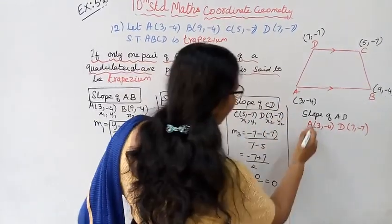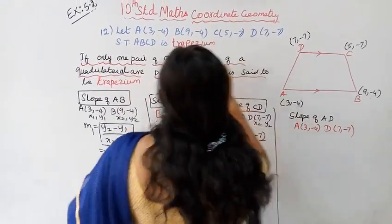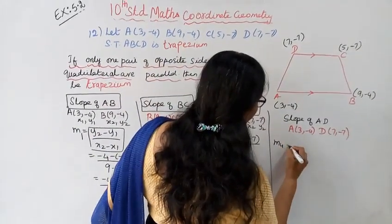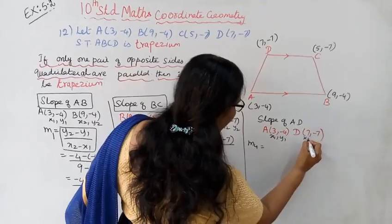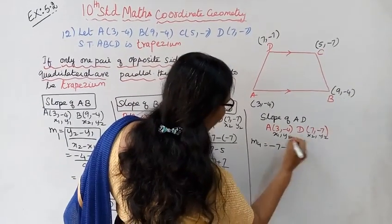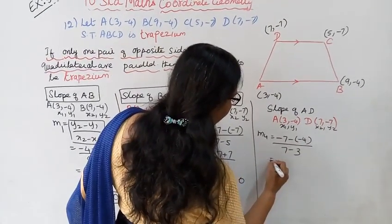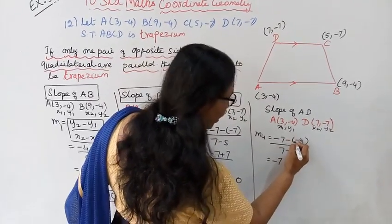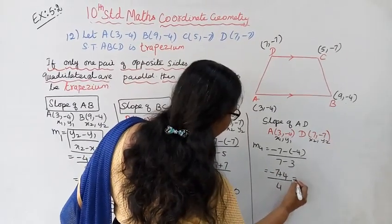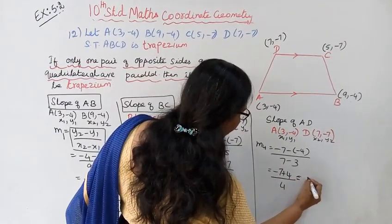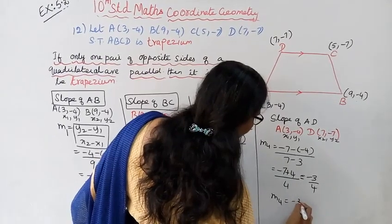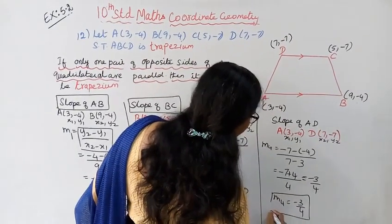Slope of AD: A(3, -4) and D(7, -7). Using y2 minus y1 by x2 minus x1: (-7 minus (-4)) divided by (7 minus 3) = (-7 + 4) / 4 = -3 / 4. So M4, slope of AD, equals -3/4.